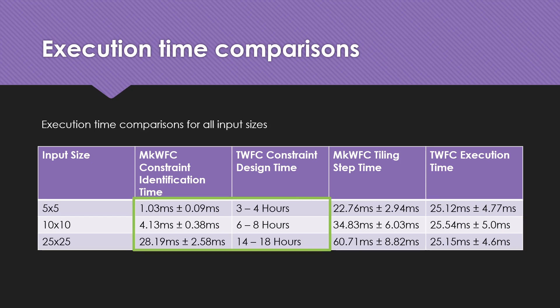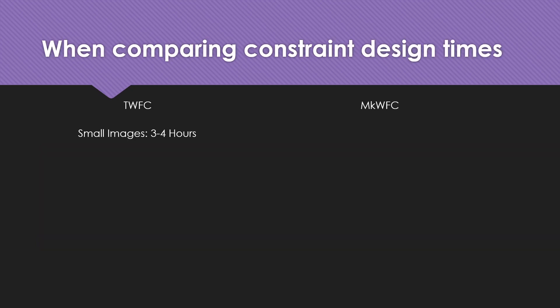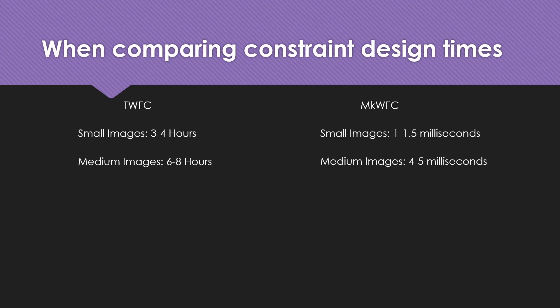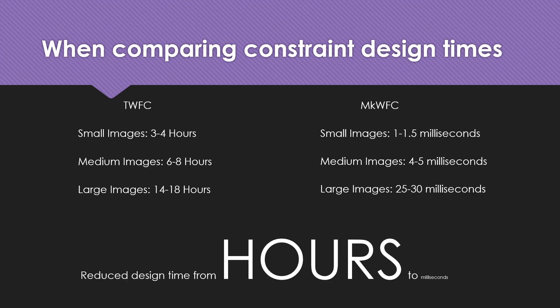When comparing constraint identification time, tiling wave function collapse design takes approximately 3 to 4 hours for small images, 6 to 8 hours for 10x10 images, and 14 to 18 hours for large 25x25 images. However, by automating this process in Markov chain wave function collapse, we do the same work in milliseconds: 3 to 4 hours is converted to 1 to 1.5 seconds, 6 to 8 hours to 4 to 5 milliseconds, and 14 to 18 hours to 25 to 30 milliseconds. Simply by automation, we have reduced design time from hours to milliseconds.